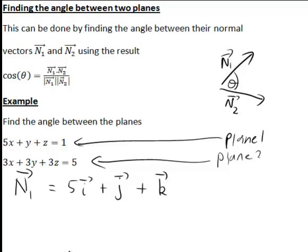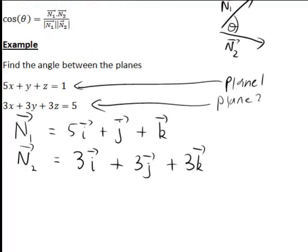While for plane 2, the normal vector n2, again looking at the 3, 3, 3 that are the coefficients of x, y, z in plane 2. Therefore the normal vector of that plane will be 3i plus 3j plus 3k.